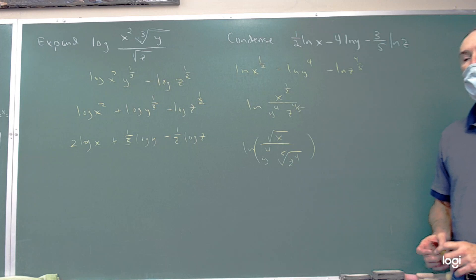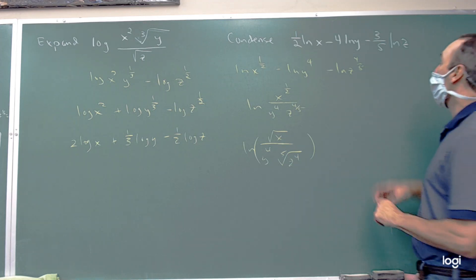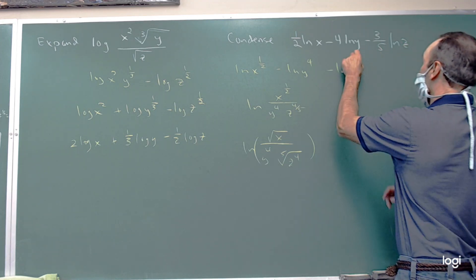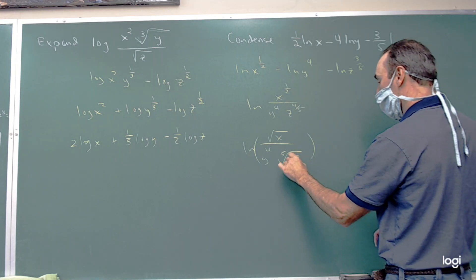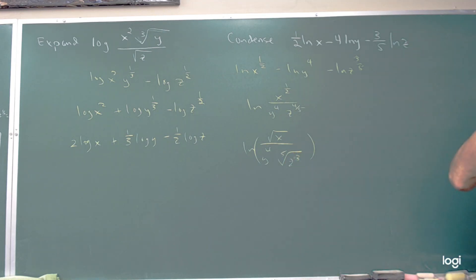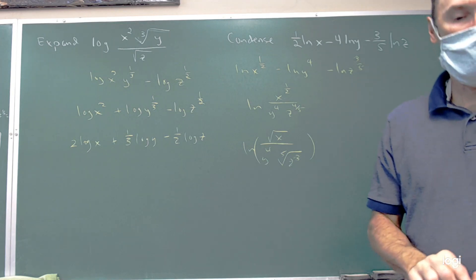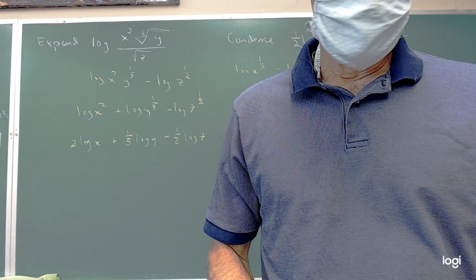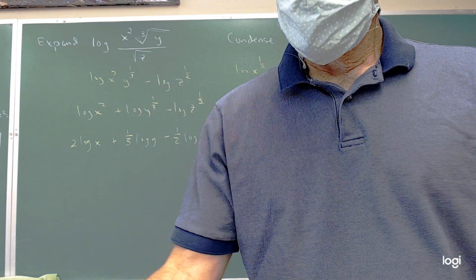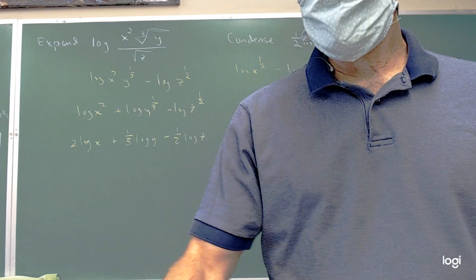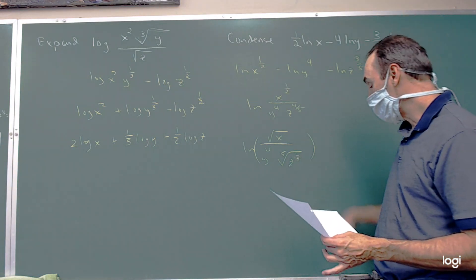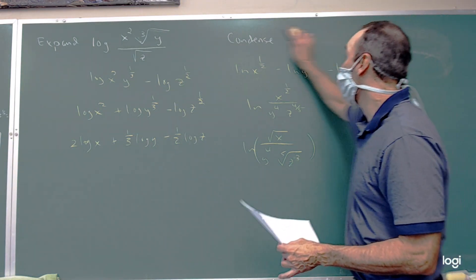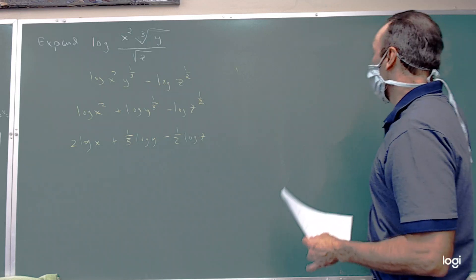A student correction: it's 3/5, not 4/5, so we'll change that one to a 3 in the numerator. Other questions? Okay, let me give you another one that is kind of like this, in that you're going to have to use these properties of logarithms — kind of decomposing the logarithm in a different context.